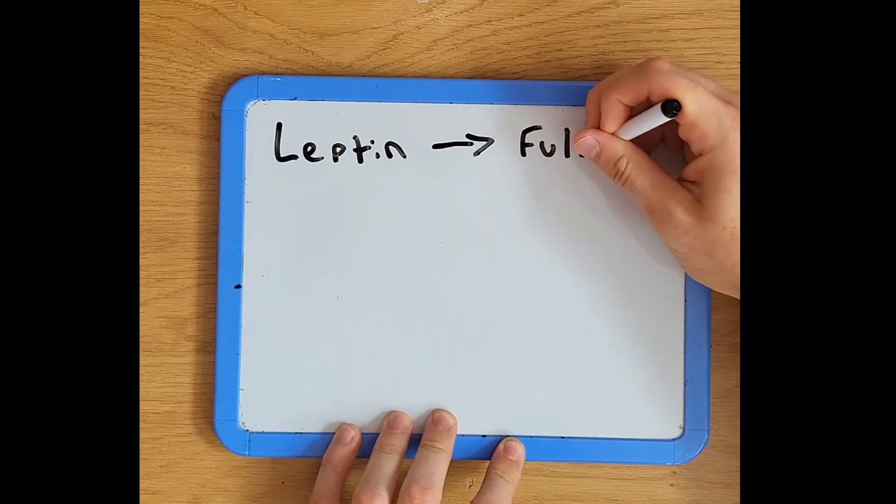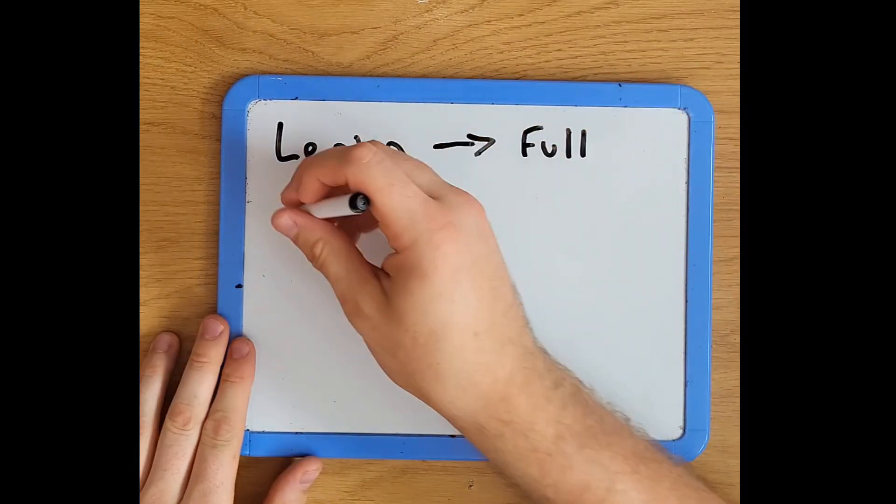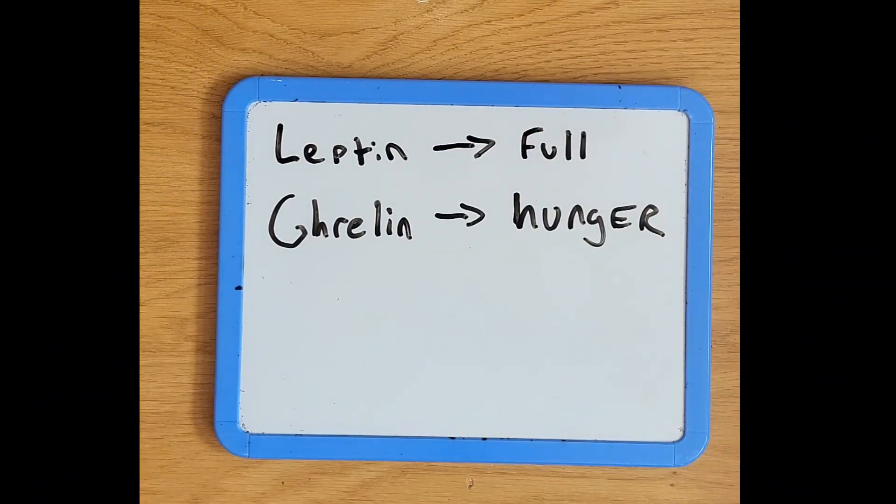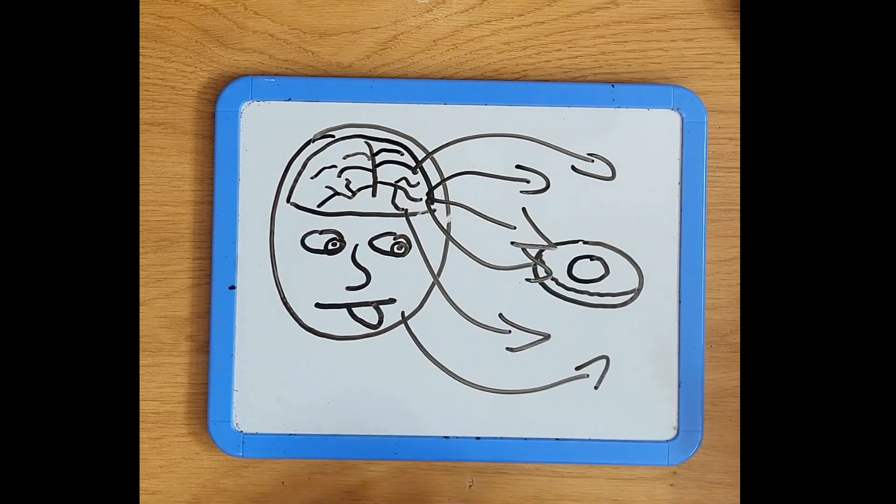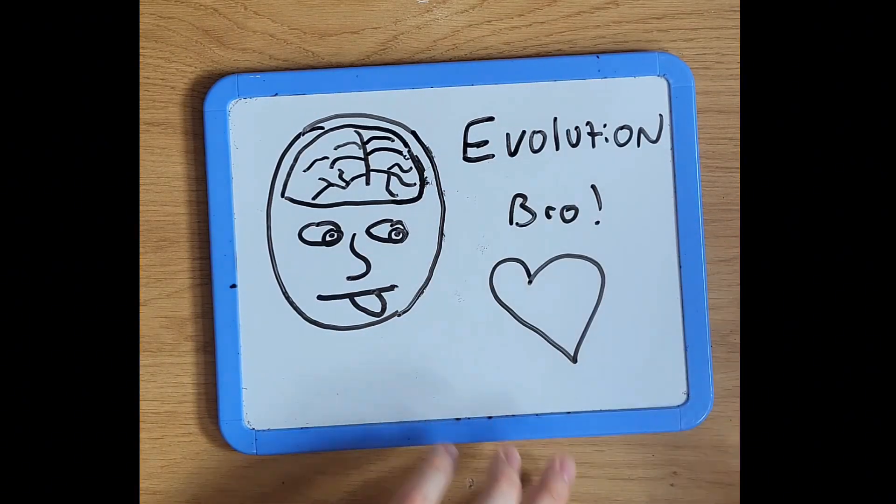Leptin, the hormone that keeps you full, starts to drop. And ghrelin, the hunger hormone, spikes. Your brain starts sending reward signals every time you see a donut. And that's not your lack of willpower. That's your biology doing its job.